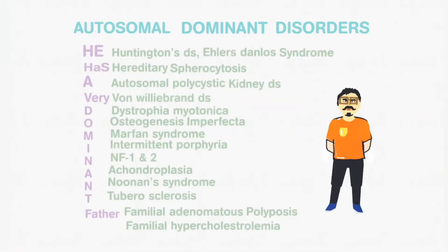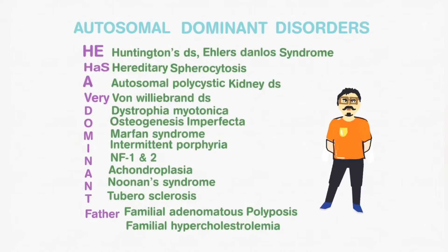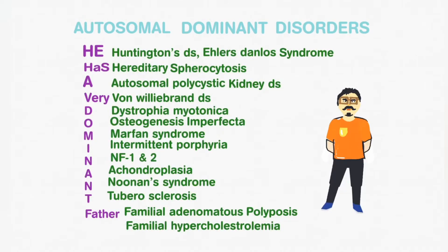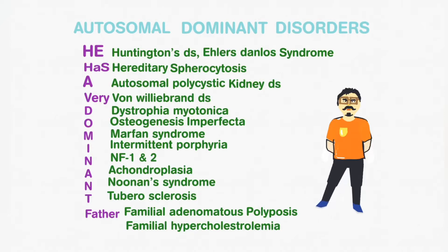To begin with Autosomal Dominant Disorders, we have the mnemonic 'he has a very dominant father', which stands for Huntington's Disease, Ehlers-Danlos Syndrome, Hereditary Spherocytosis, Autosomal Polycystic Kidney Disease, and Von Willebrand Disease.